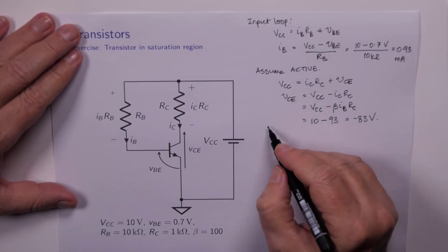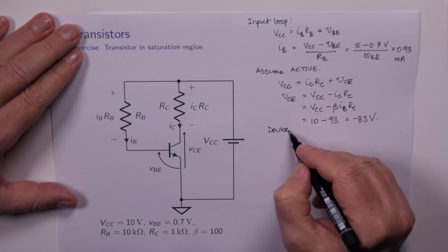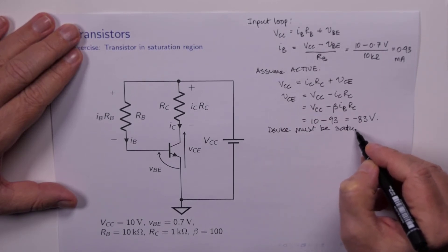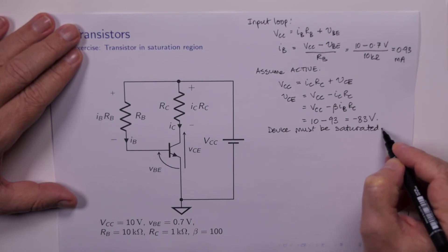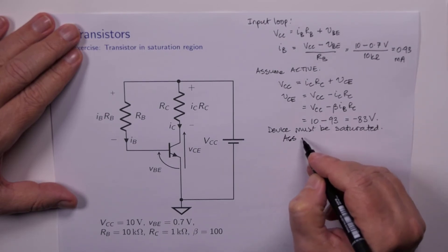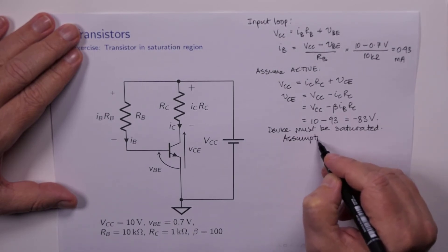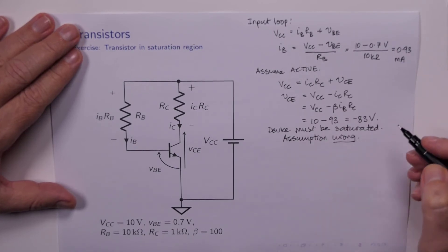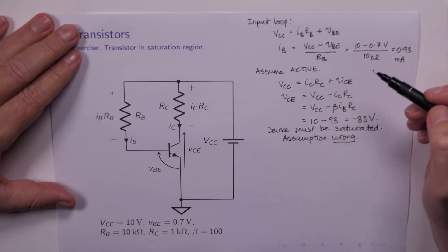It cannot keep going down until it reaches minus 83 volts. So this cannot be true. So device must be saturated. So our assumption is wrong.